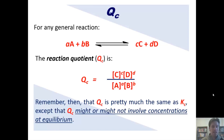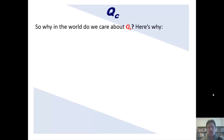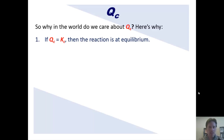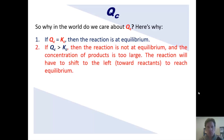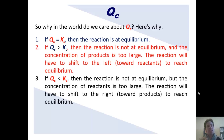Conceptually, why would we care about calculating QC? Here's why. First, if QC equals KC, then your reaction is at equilibrium. But if QC is greater than KC, then your reaction is not at equilibrium and the concentration of the products is too large. Since the products appear in the numerator, the reaction has to shift to the left toward reactants before it can reach equilibrium. But if QC is smaller than KC, then the concentration of the reactants in the denominator is too big, and the reaction has to shift to the right toward products to reach equilibrium.